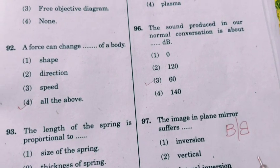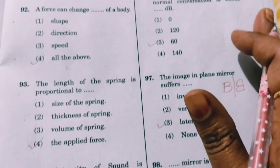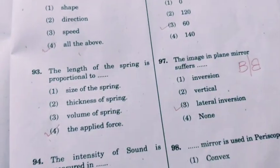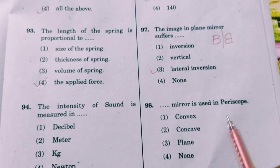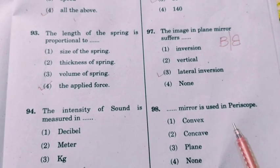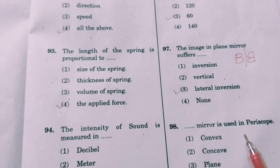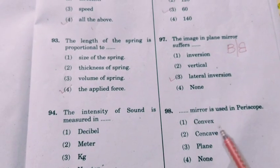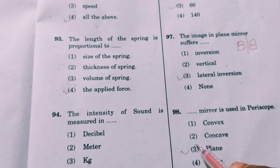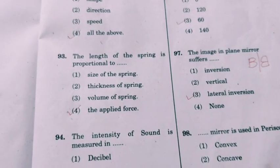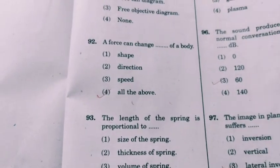Lateral inversion means left appears as right and right appears as left. The next question: which mirror is used in a periscope? A periscope is an instrument used to see people hiding at distant places. A plane mirror is used in making a periscope, and also in a kaleidoscope.